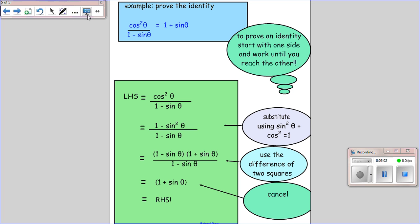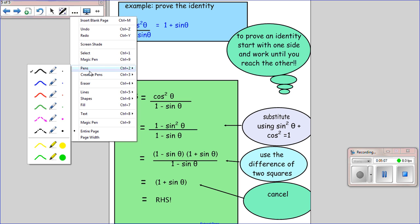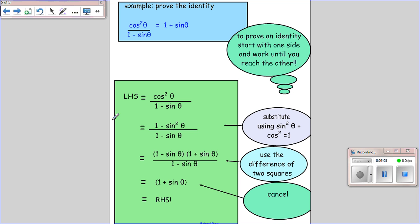We then use the difference of two squares. Now the difference of two squares is really important and you must make sure that you can do it. It comes up again and again. So if you remember, we have a squared minus b squared.